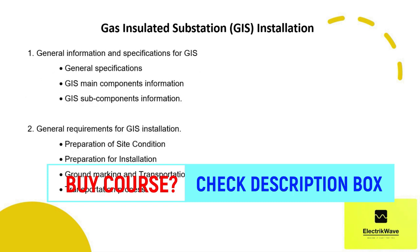Referring to general information and specifications for GIS, we will discuss about general specifications, GIS main components information, and GIS sub-components information. For general requirements for GIS installation, we will discuss about preparation of site condition, preparation for installation, ground marking and transportation sequence, and transportation process.